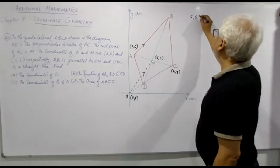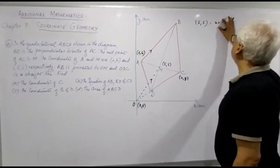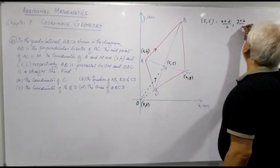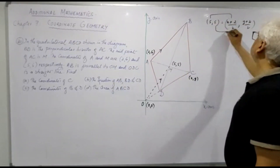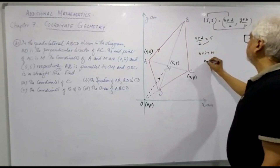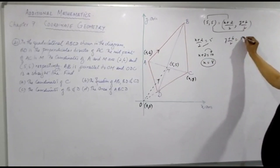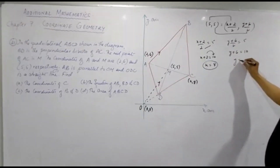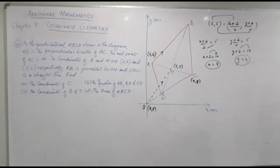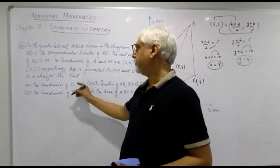Since M is the midpoint of AC, I can say that (5, 5) equals ((X + 2)/2, (Y + 6)/2). So X plus 2 over 2 equals 5, which gives X plus 2 equals 10, so X equals 8. And Y plus 6 over 2 equals 5, giving Y plus 6 equals 10, so Y equals 4. The coordinates of C are (8, 4).